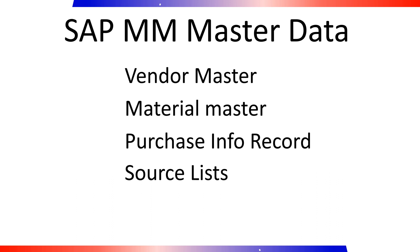In SAP Materials Management (MM), the source list is a procurement feature that specifies approved sources or vendors for procurement of materials. It helps control the selection of vendors during the procurement process and ensures that materials are sourced from approved or preferred suppliers. The source list provides information on which vendors are allowed or blocked for procurement of specific materials.